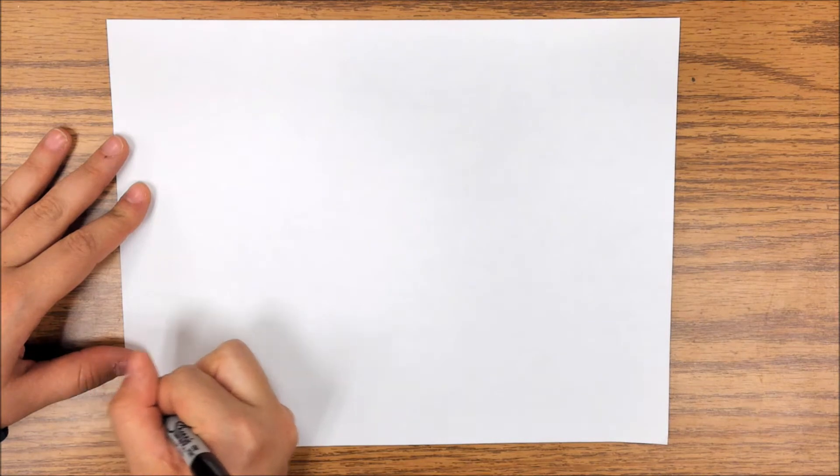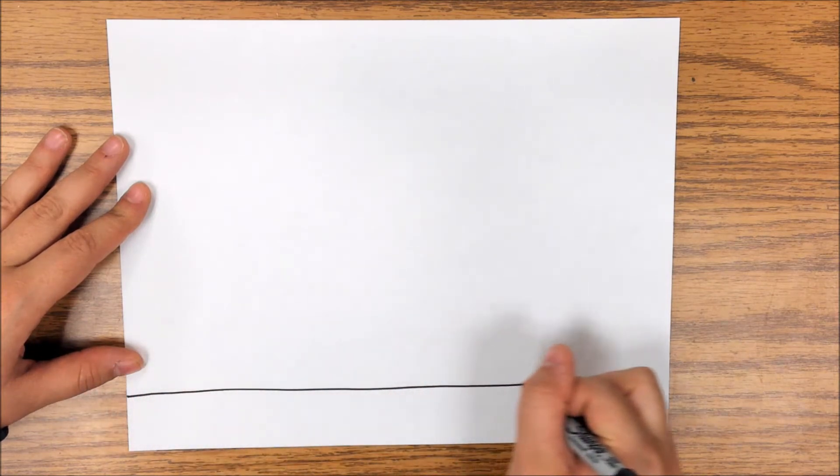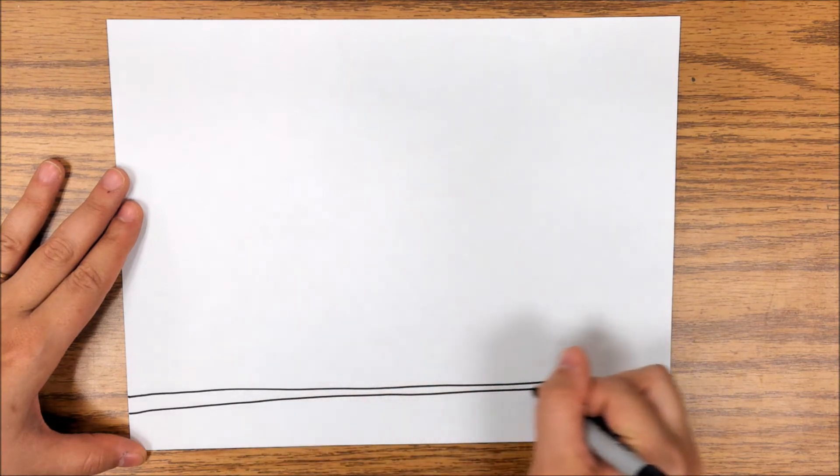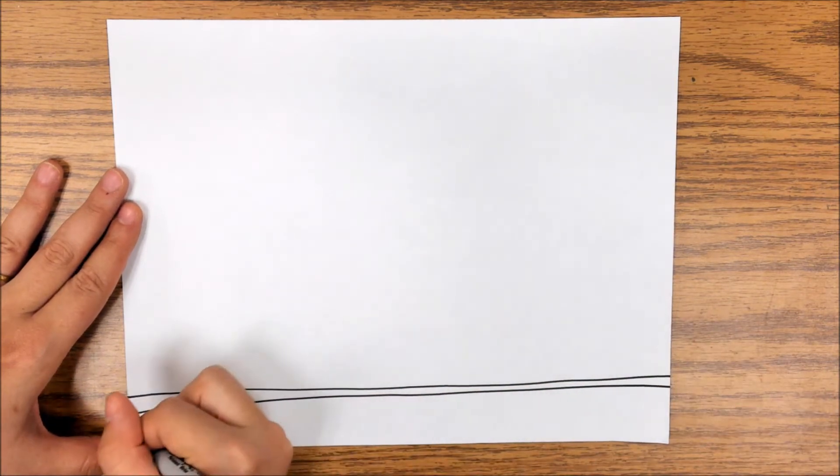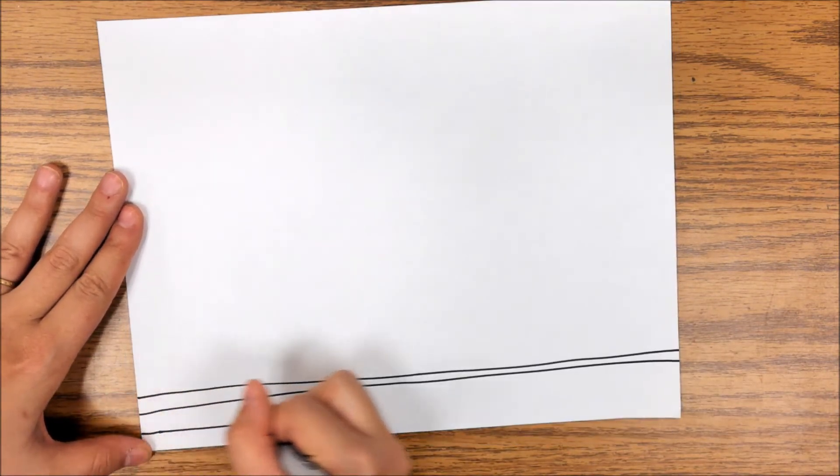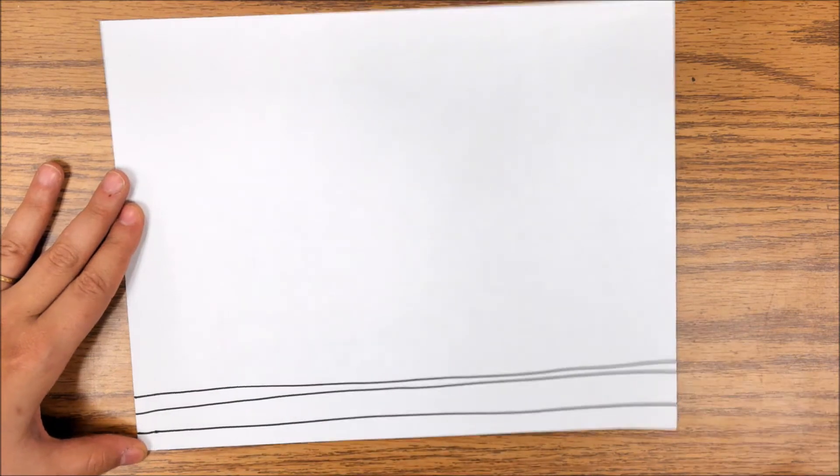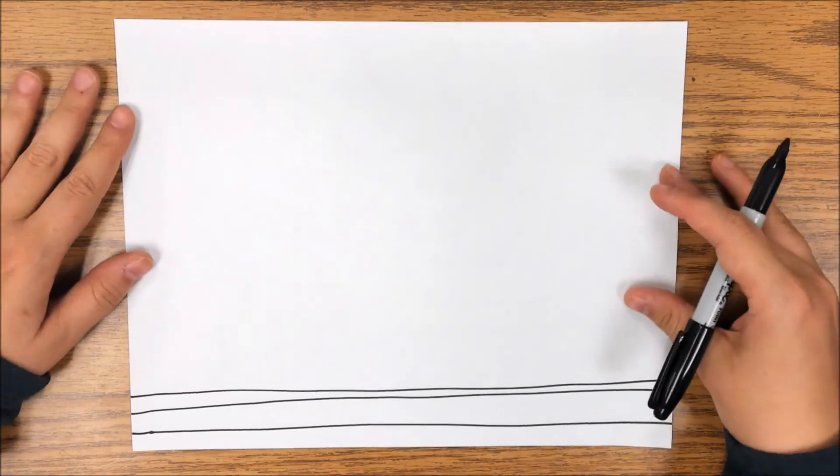First step that we're going to do is we're going to come down to the bottom of our paper and we are going to draw three horizontal lines across the bottom of our paper. So I'm going to come up, I'm going to do one, and remember horizontal is going all the way across. If you have a ruler at home you could use this to help you. And then I'm going to do two, and three. And this is going to kind of make our sidewalk and the road in front of our buildings.